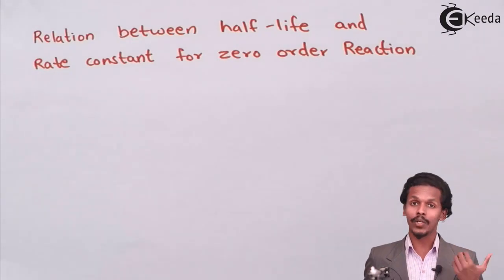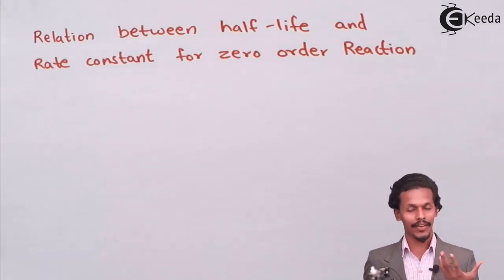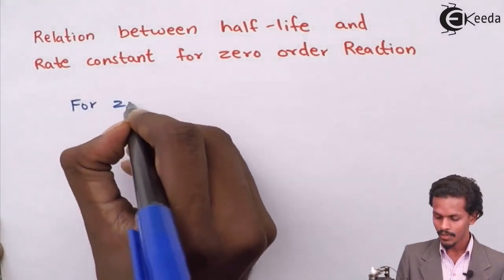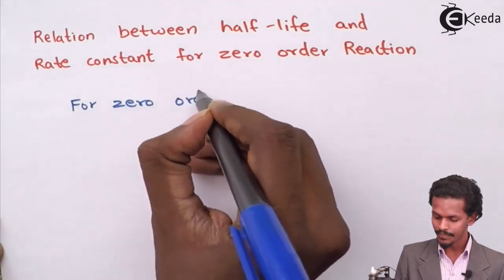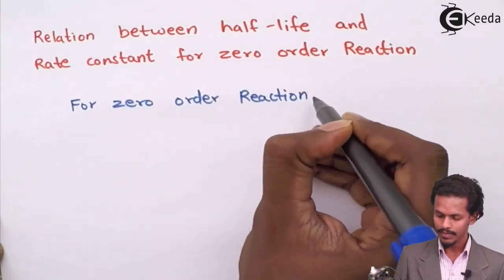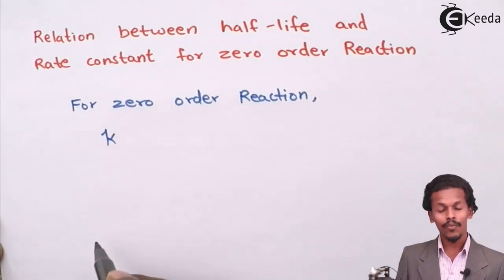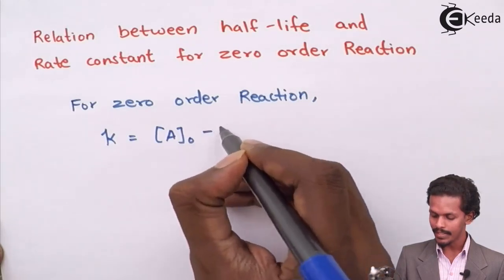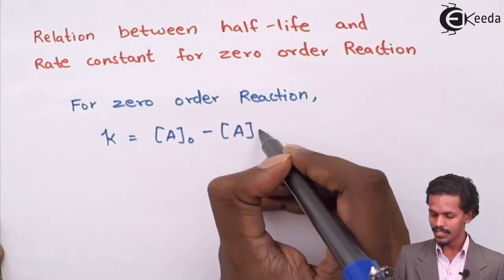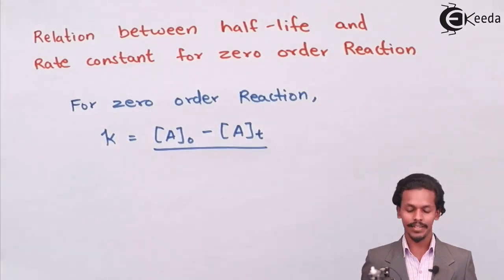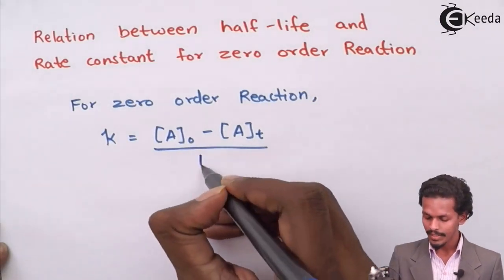As we have derived an equation based on the rate constant for a zero-order reaction, we have got for zero-order reaction K equals concentration A0 minus concentration AT, that is concentration after time T, divided by T.